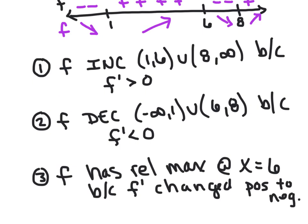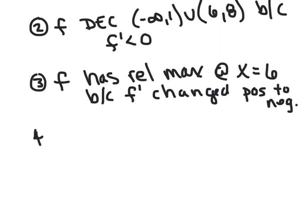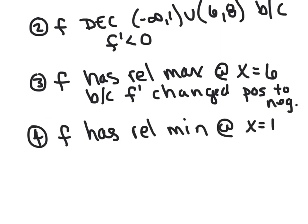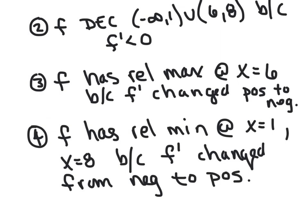It looks like we've got two relative mins. There's a relative min at 1 and a relative min at 8. f has a relative min at x equals 1 and x equals 8 because f' changed from negative to positive. That's all there is to it — it's just about interpreting that graph and making a great sign chart, and once we get that sign chart we're in business.